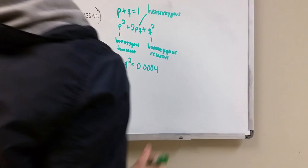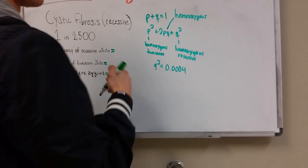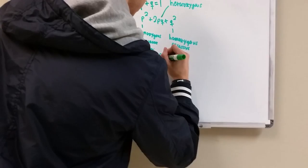And then we square root this number to get just the recessive allele, not the combination of recessive and recessive. So this cancels out and you square root it. And when you square root it, you should get 0.02.